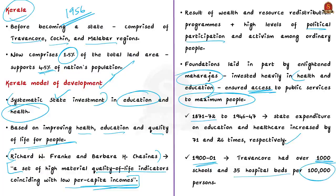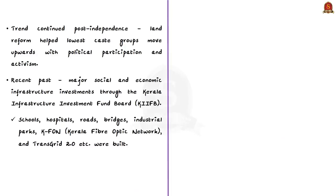Even after independence, these trends continued. Among the states, Kerala and West Bengal were the only ones that implemented land reforms successfully and efficiently. These land reform struggles reinforced the low-caste groups in these states to move upward economically and socially, along with increasing political participation and activism.